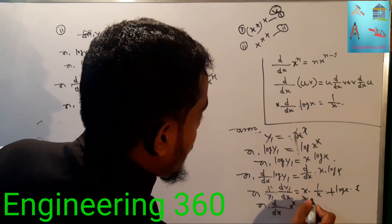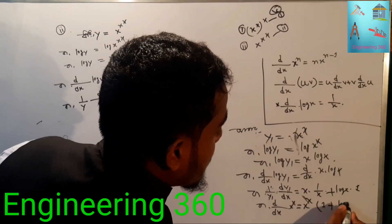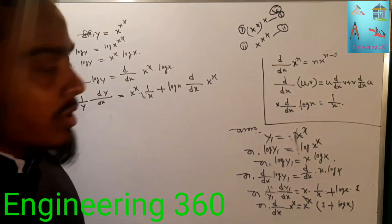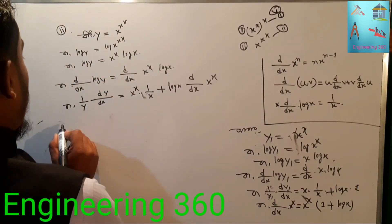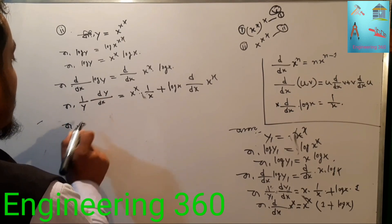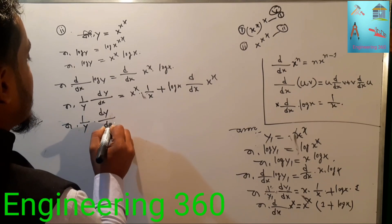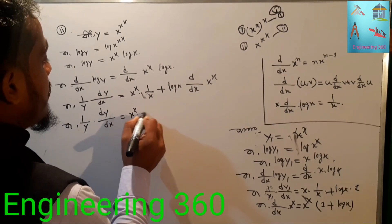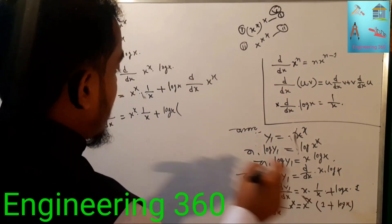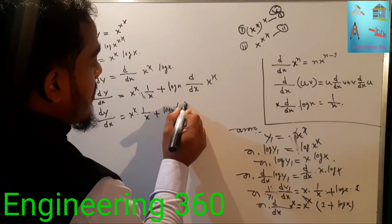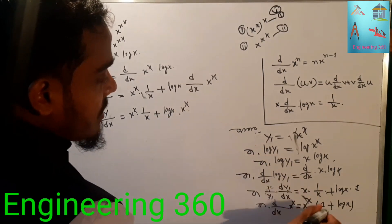So d/dx of x to the power x equals x to the power x times (1 plus log x). Now substituting back: 1 by y times dy/dx equals x to the power x times 1 by x plus log x times x to the power x times (1 plus log x).